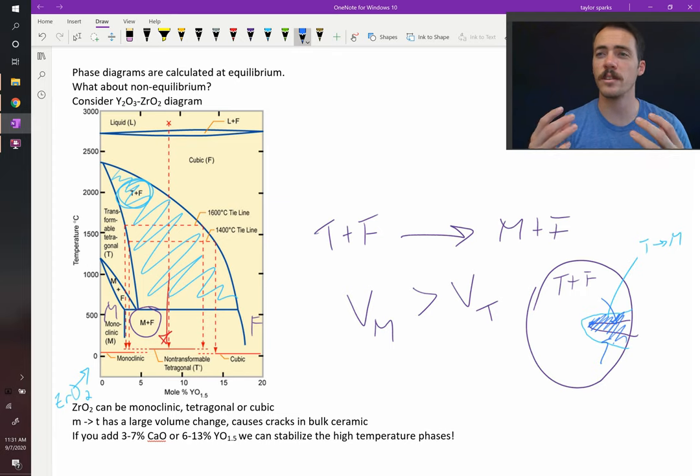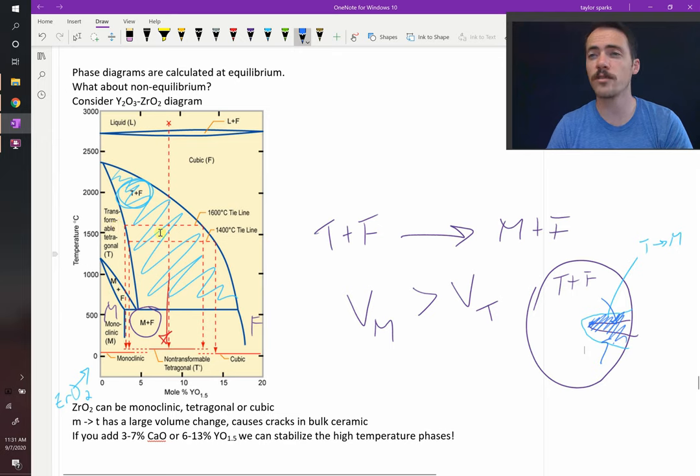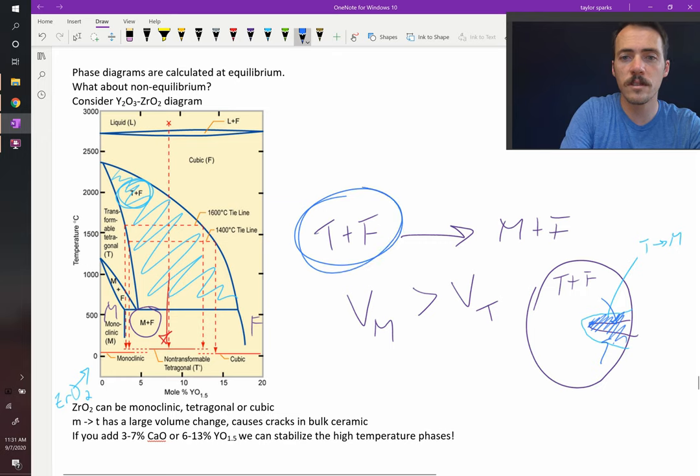When you see ceramic knives and things like that with the white blade, it's almost certainly transformation toughened zirconia. It's zirconia where they've added a little bit of yttria so that you end up in this T plus F region.